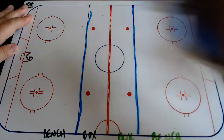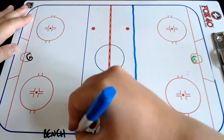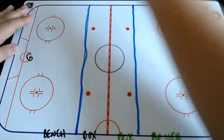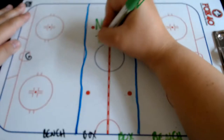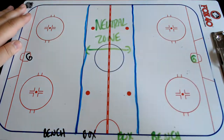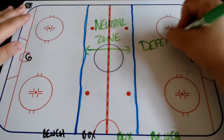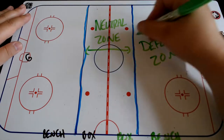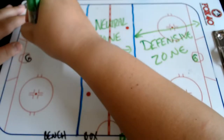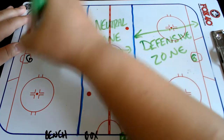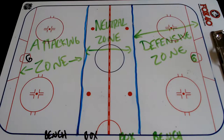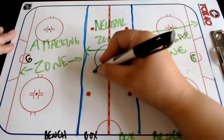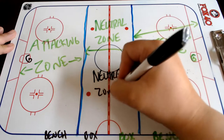The green team's defensive zone will be from the blue line all the way to the end of the ice where their goalie is. The neutral zone for both teams will be between the two blue lines at center ice. And the attacking zone for the green team will be between the other blue line and the other side of the ice where the other team's goalie is standing.